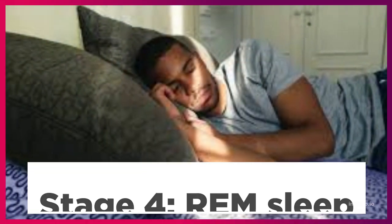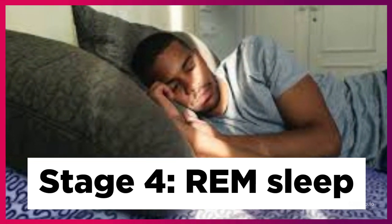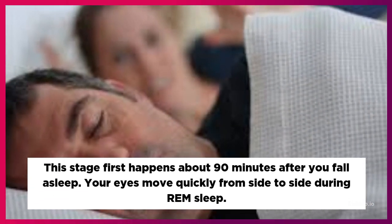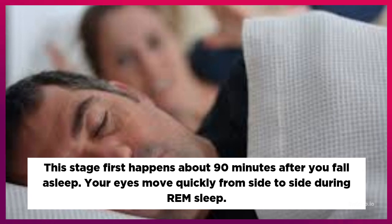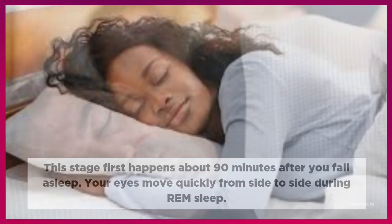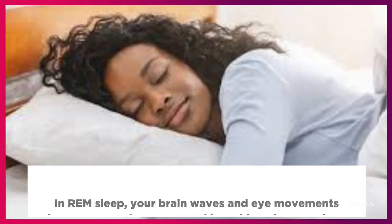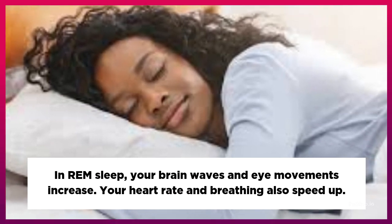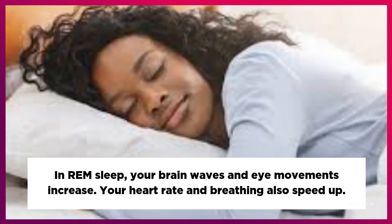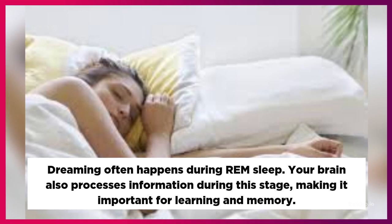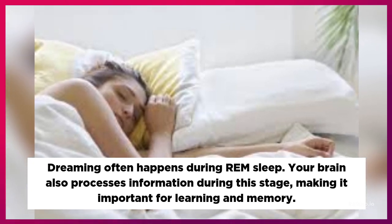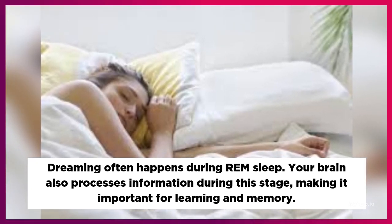Stage 4: REM sleep. This stage first happens about 90 minutes after you fall asleep. Your eyes move quickly from side to side during REM sleep. Your brain waves and eye movements increase, and your heart rate and breathing also speed up. Dreaming often happens during REM sleep. Your brain also processes information during this stage, making it important for learning and memory.